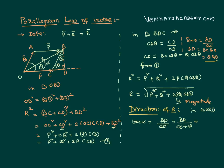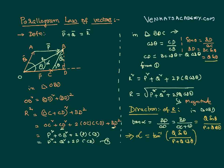Substituting the values — BD = Q·sin theta, OC = P, and CD = Q·cos theta — the resultant vector R makes an angle alpha with vector P̄, where alpha equals tan inverse of Q·sin theta divided by (P + Q·cos theta). This is the parallelogram law of vectors: if two vectors are represented as two adjacent sides of a parallelogram from a common point, the resultant is the diagonal, and its direction is given by this formula. Thank you, see you in the next video.